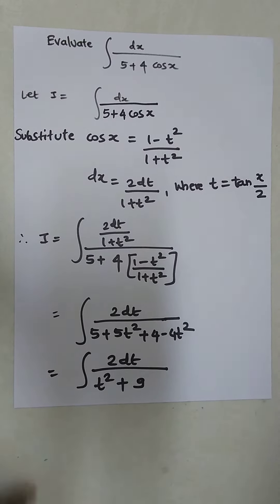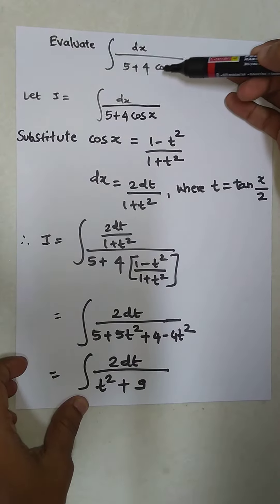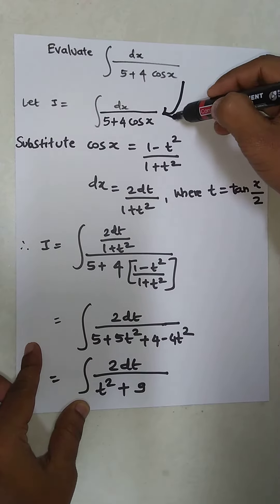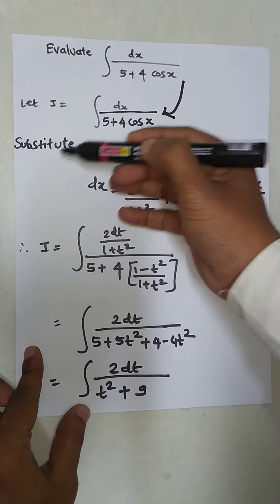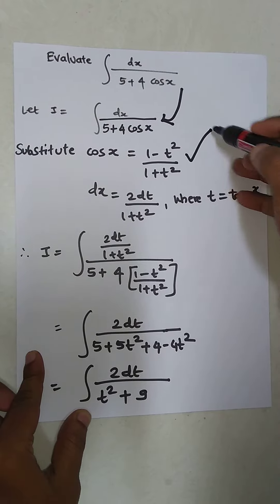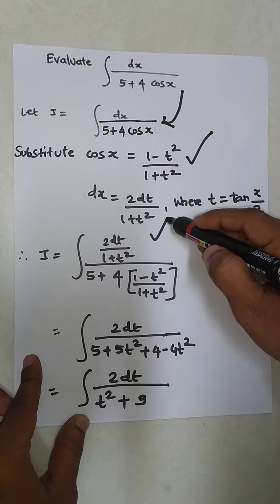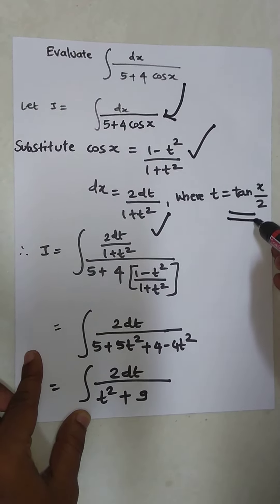Hello friends, today's topic: evaluate the integral dx/(5 + 4cos x). First, we write the question in the given format. Now substitute cos x = (1 - t²)/(1 + t²), and dx with the corresponding expression where t = tan(x/2).